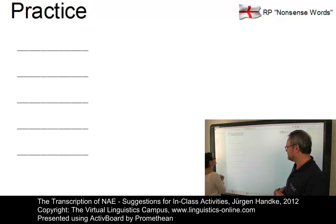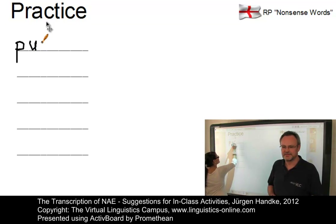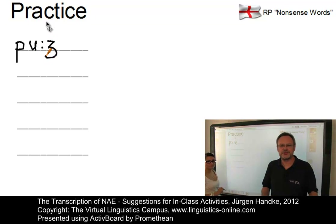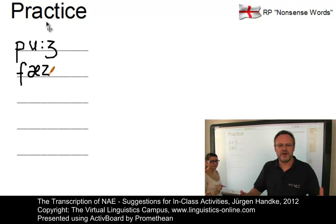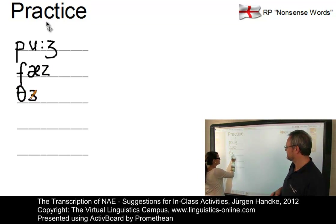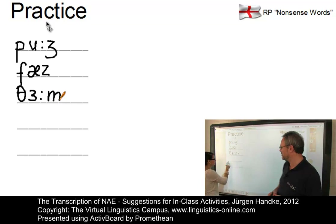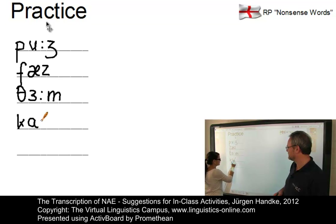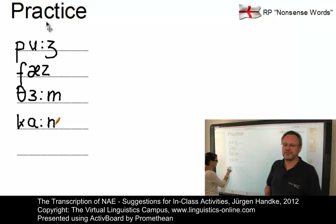Here's the first word in RP: 'pooj.' The next word is 'faz.' Number three is 'therm.' Number four is 'carn.' And the last one is 'yawth.' She can't quite remember one symbol — the ETH, which is the symbol for the voiced dental fricative. Almost — but I would accept that as a nice solution.